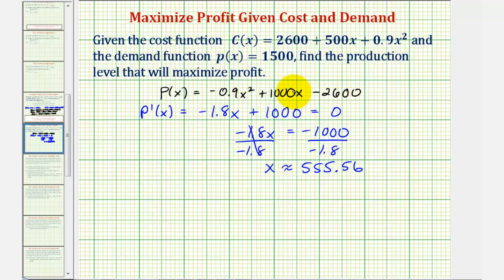But the other option would be to use either the first or second derivative test to determine whether we have a max or min at this x value. Notice if we found the second derivative function P''(x), it would be equal to just negative 1.8, which again means the function is always concave down, and therefore at this critical number we would have a high point or a maximum function value.